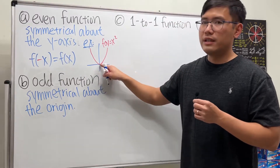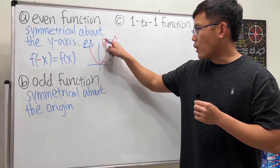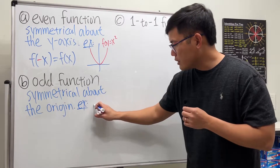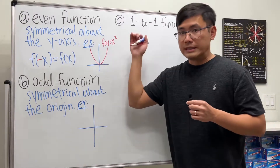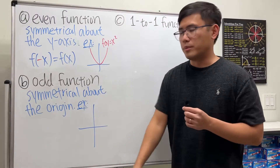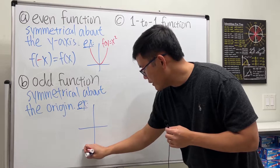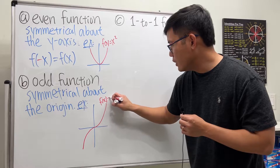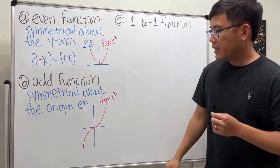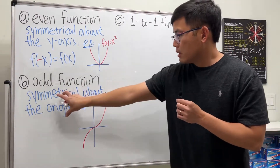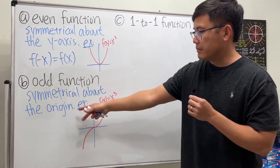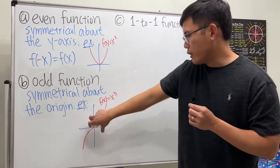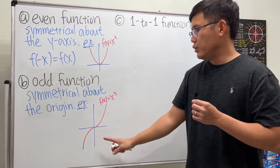The origin is the intersection of the x and y axes. For an odd function, you can use the same idea but change the exponent to a third power. If we have f(x) = x³, the picture shows that if a graph is symmetrical about the origin, you can rotate it 180 degrees either way and still get the same thing back.